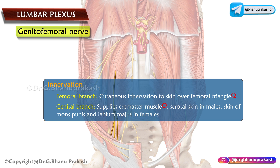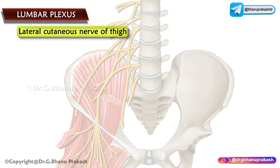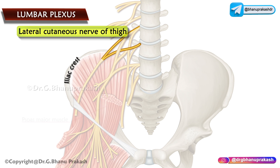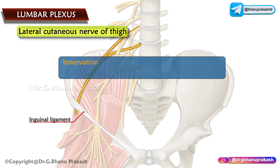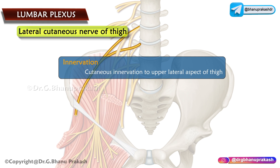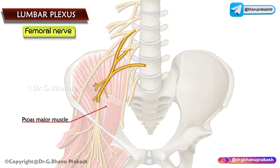The lateral cutaneous nerve of the thigh, also called the lateral femoral cutaneous nerve, emerges beneath the lateral border of the psoas major above the iliac crest, runs laterally in front of the iliacus muscle, and enters the thigh by passing beneath the lateral end of the inguinal ligament, providing cutaneous innervation to the upper lateral aspect of the thigh. The femoral nerve emerges beneath the lateral border of the psoas major below the iliac crest and enters the anterior compartment of the thigh by passing deep to the inguinal ligament.